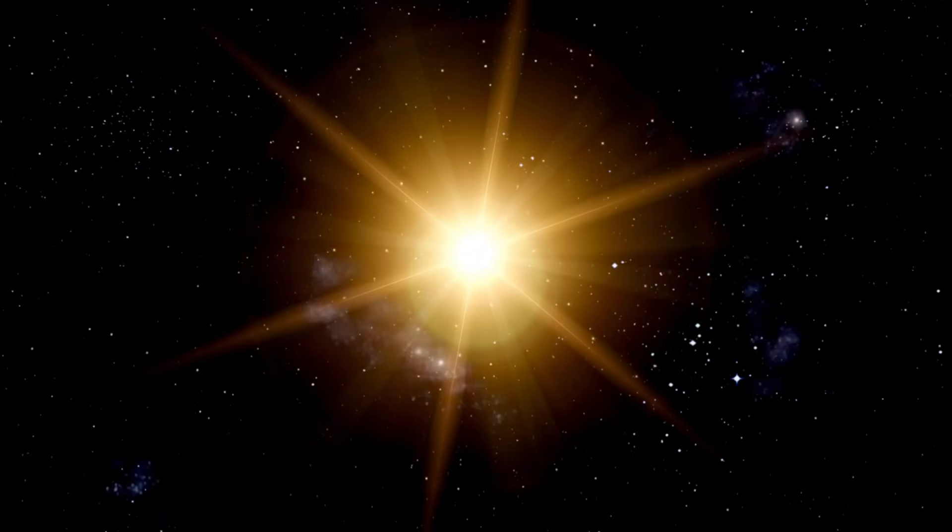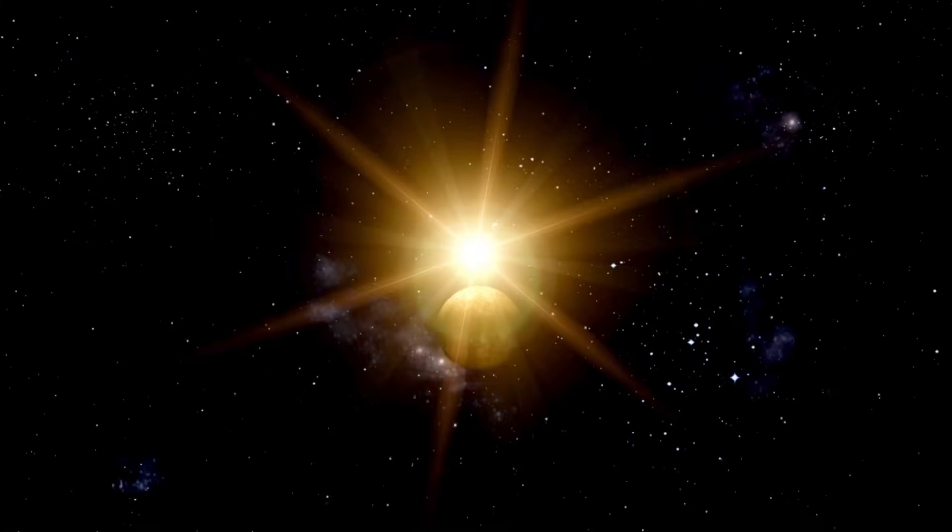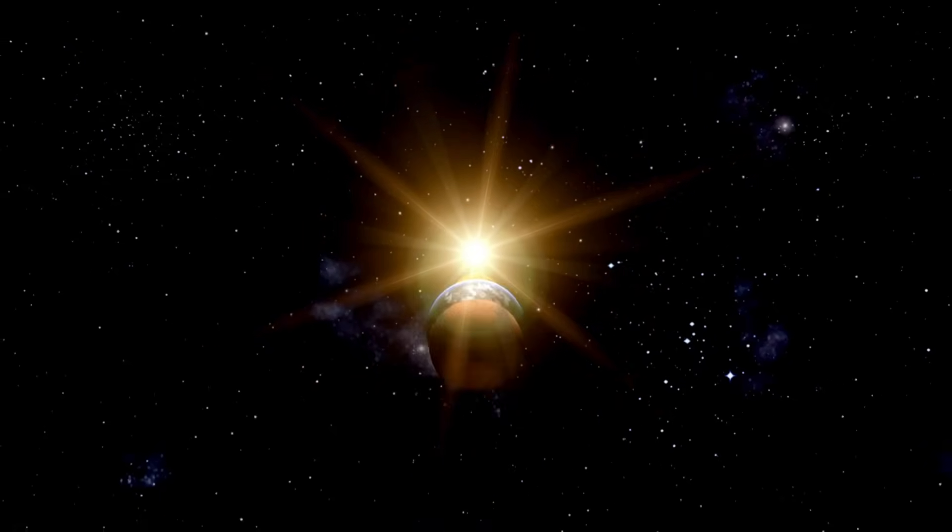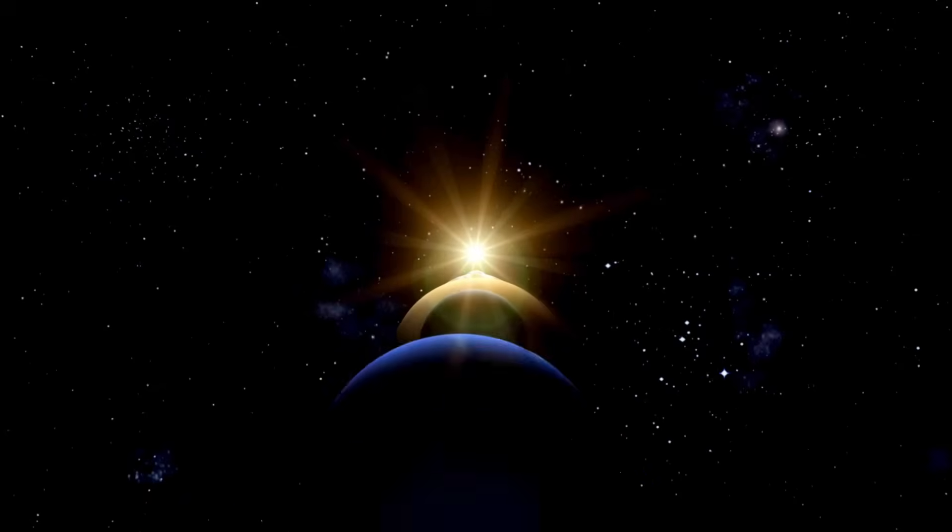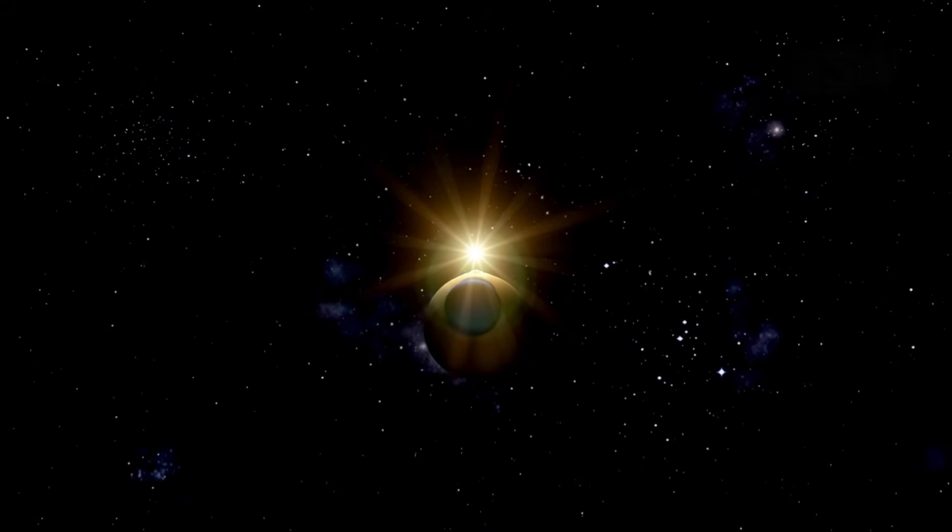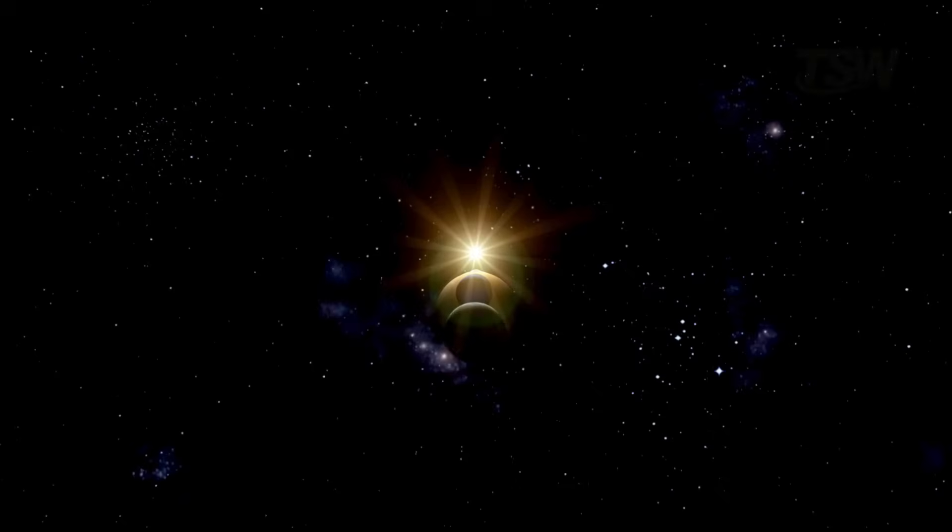You probably know the classical planets of our solar system: Mercury, Venus, Earth, Mars, Jupiter, Saturn, Uranus, and Neptune. But if you think the solar system ends at Neptune, you're very wrong.